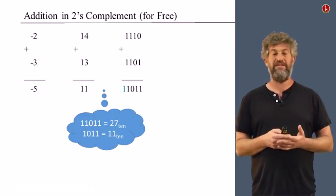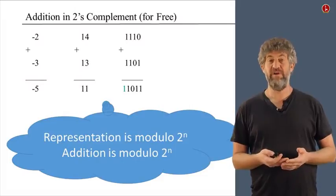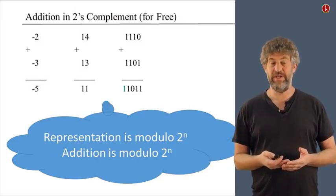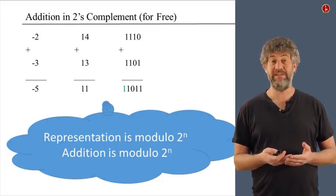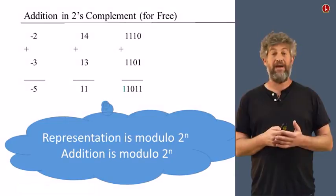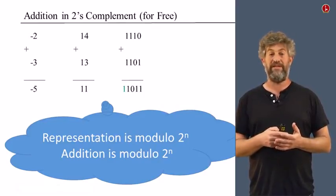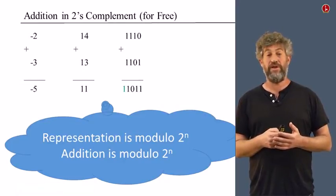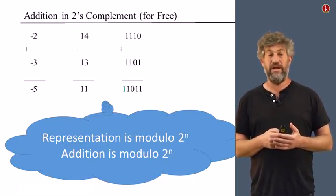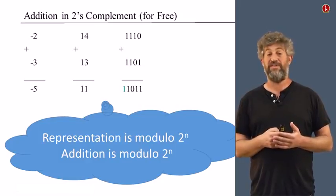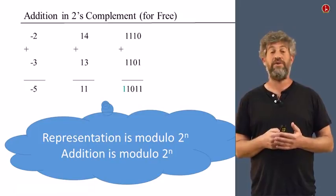Now how does that happen? Why did this magic happen? Well, as we saw in the last unit, our addition is anyway modulo 2 to the n. That is, because we throw the overflow bits, the result that we get is correct up to an additive 2 to the n additive factor. And our representation is also modulo 2 to the n, in the sense that we represent two numbers as equal. Negative 3 and 13 are equal up to an addition of exactly the same 2 to the n. And since both our representation and addition have the same convention, then they exactly fit and we don't need to do anything else.